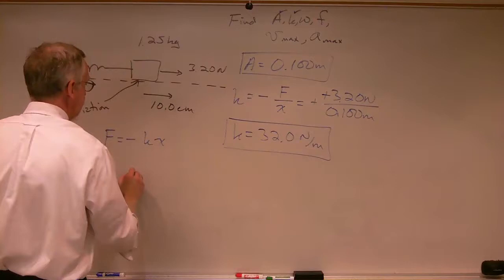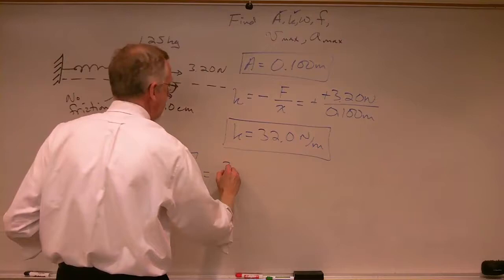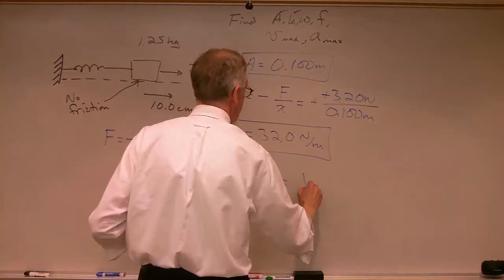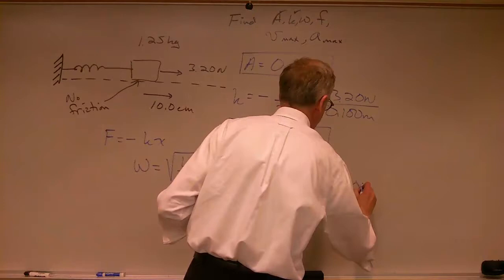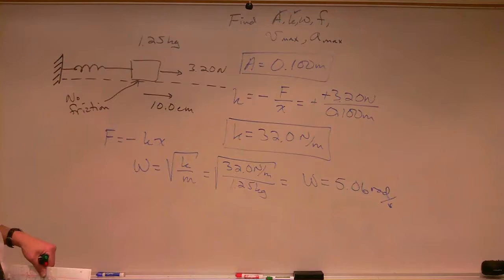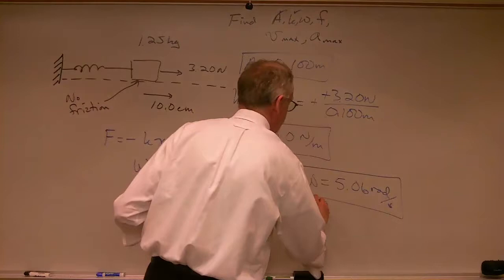What about omega? Omega is the square root of k over m — that's the square root of 32 newtons per meter divided by 1.25 kilograms. So omega equals 5.06 radians per second. We write the units as radians per second to emphasize that this is an angular frequency.